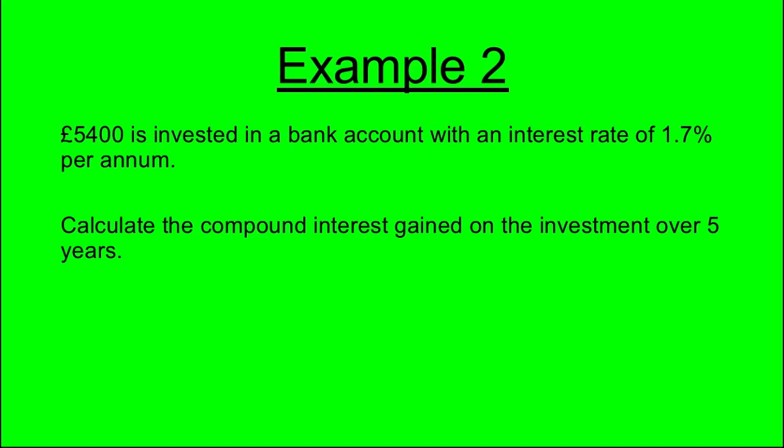Example 2: £5,400 is invested in a bank account with an interest rate of 1.7% per annum. Calculate the compound interest gained on the investment over five years.